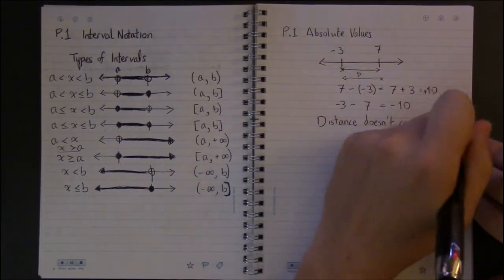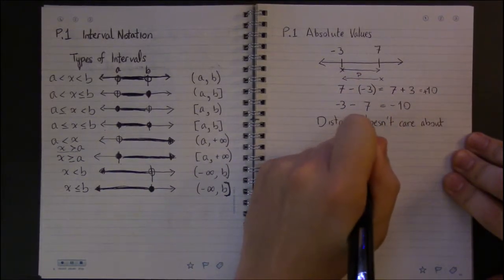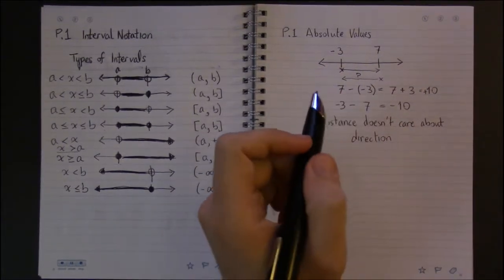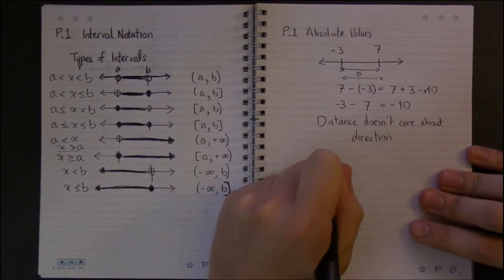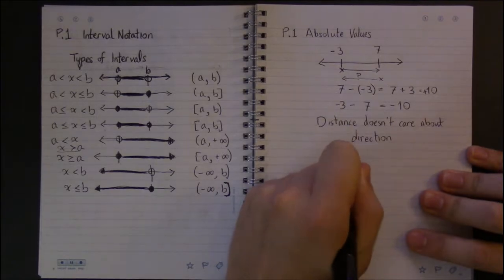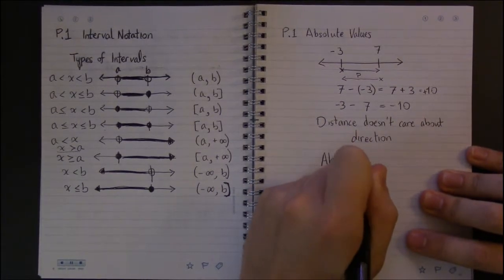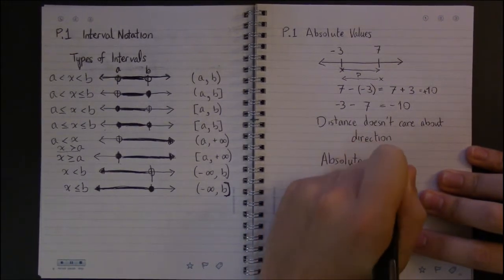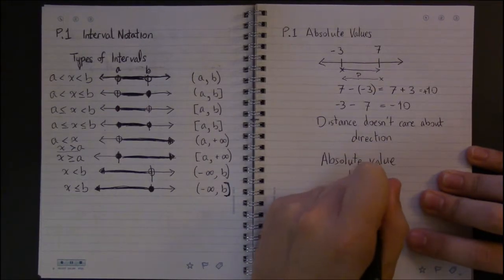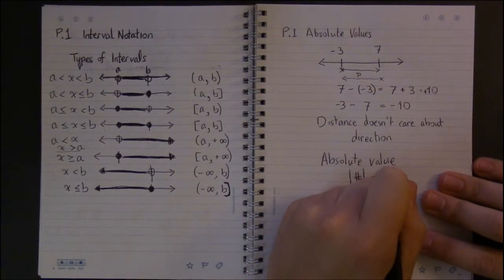And the way we do this is with absolute value. The absolute value of a number is just denoted by two vertical bars surrounding the number, and this is just the, if you will, positive version of the number.